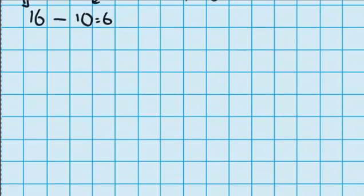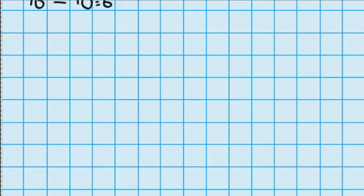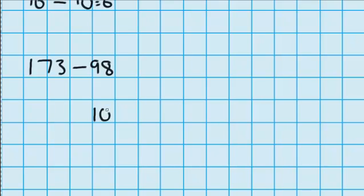Let's try another one with some numbers closer to 100. Let's try 173 minus 98. And I think to myself, wouldn't it be easier if the 98 actually was 100? So how would I have done that?